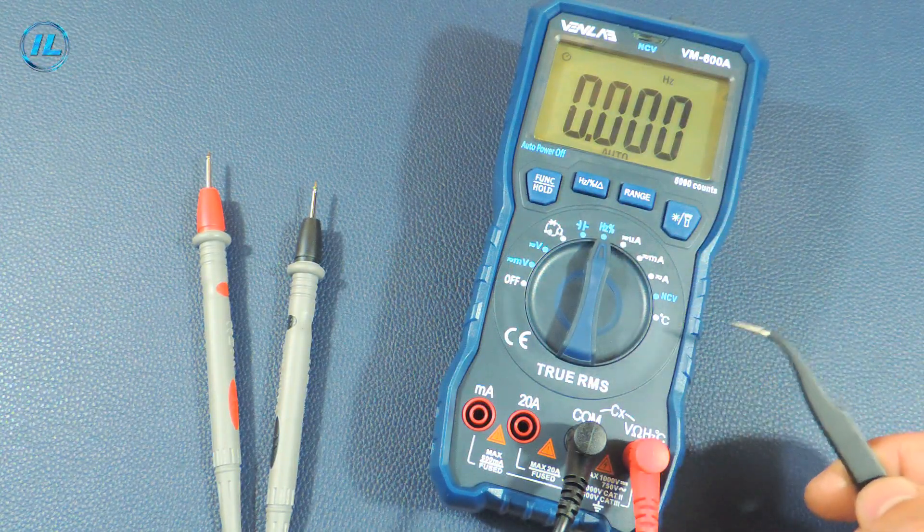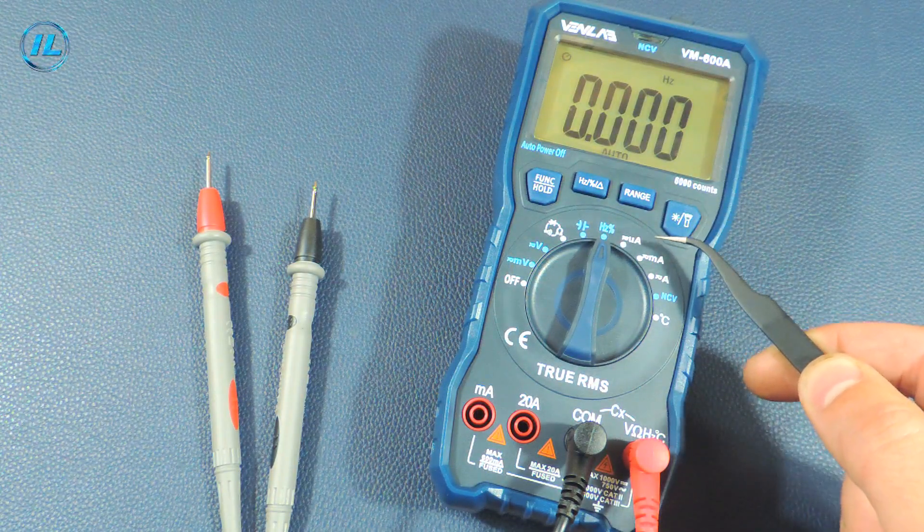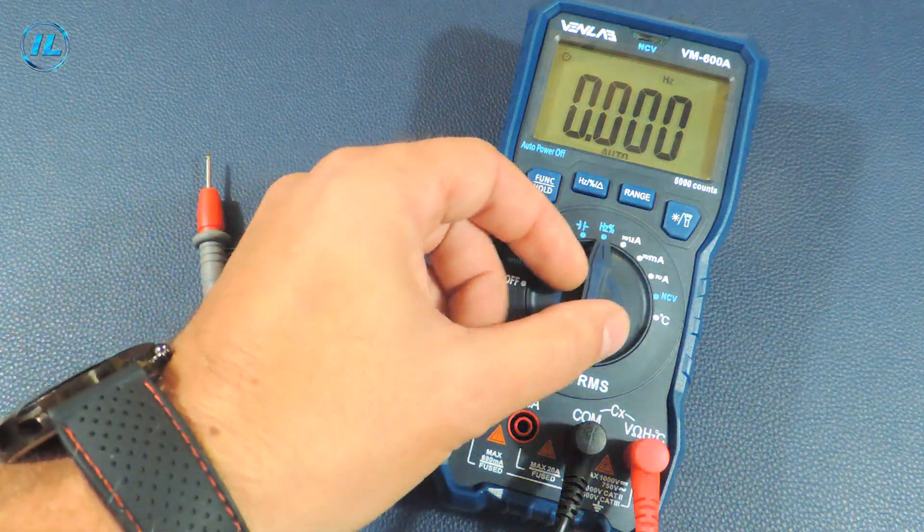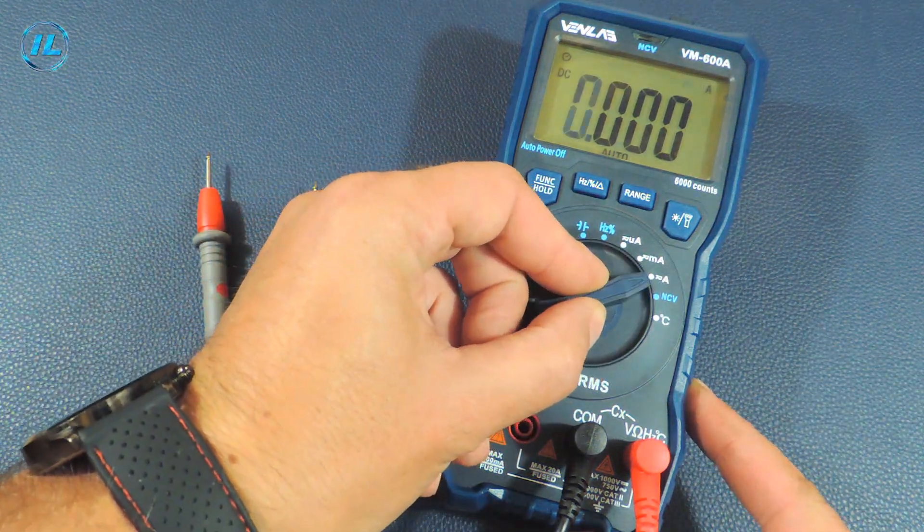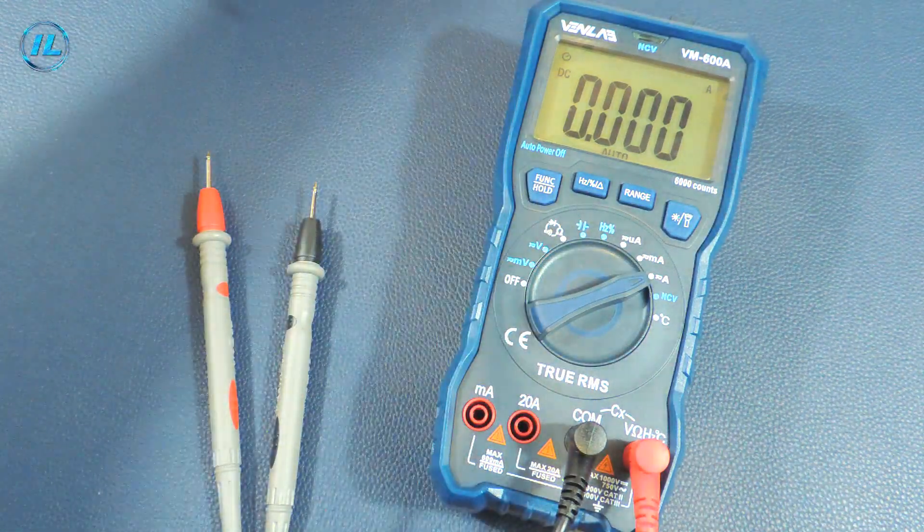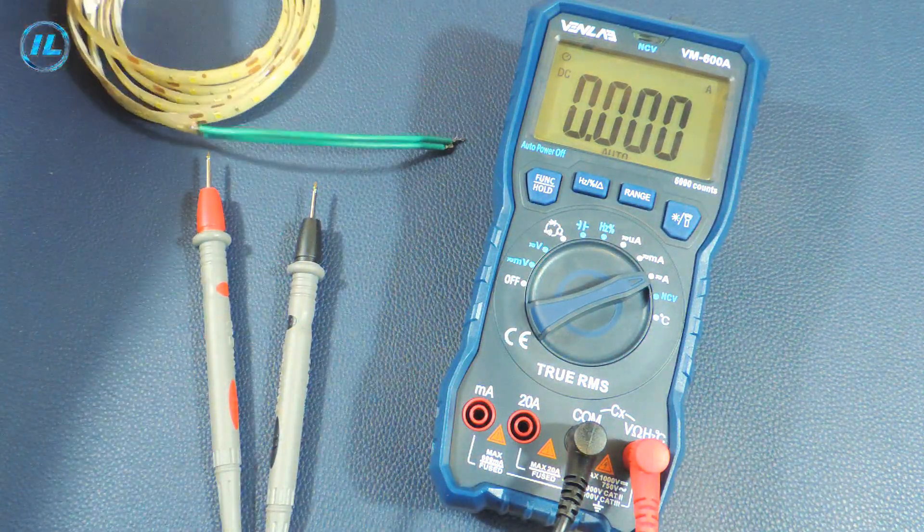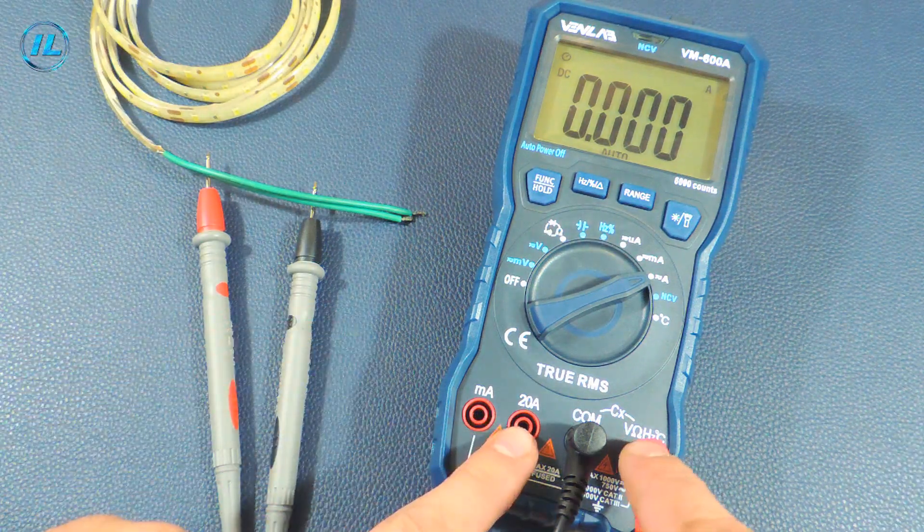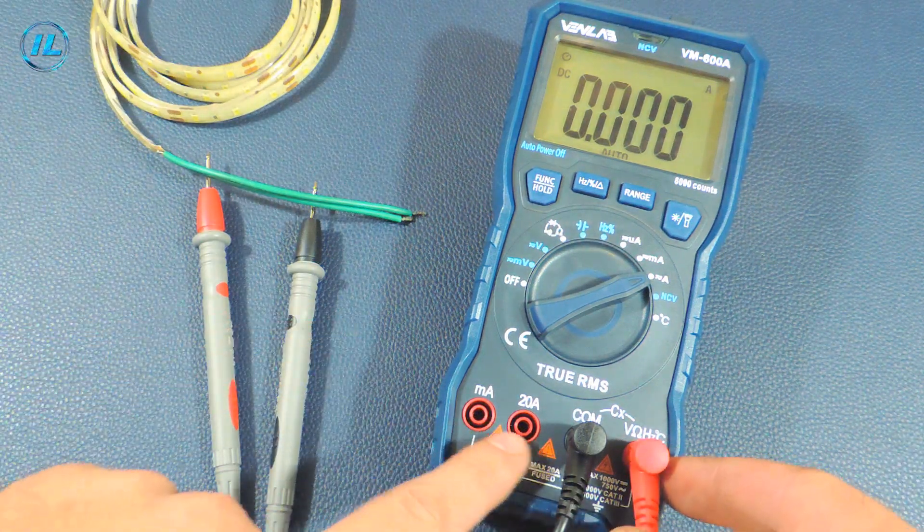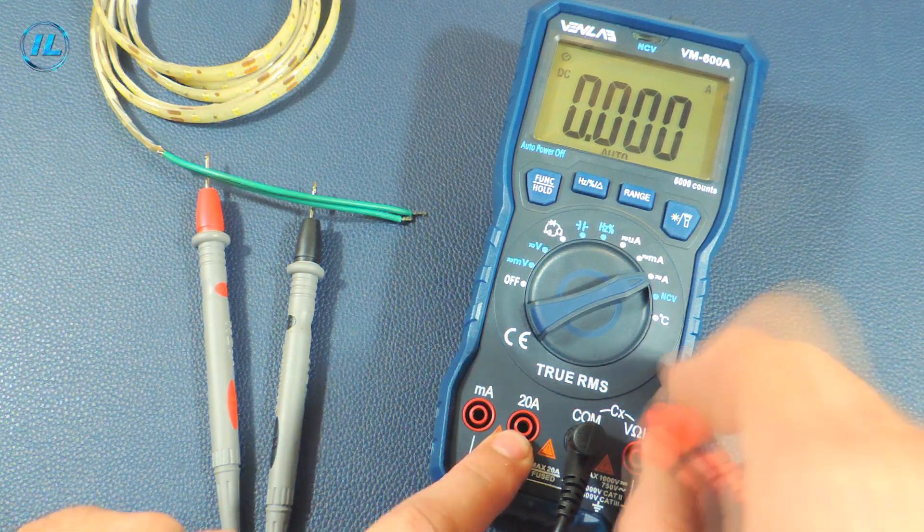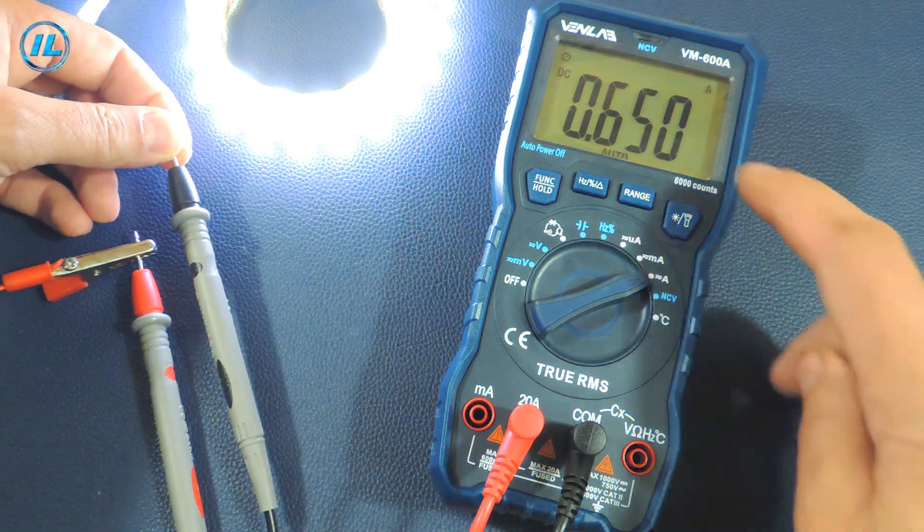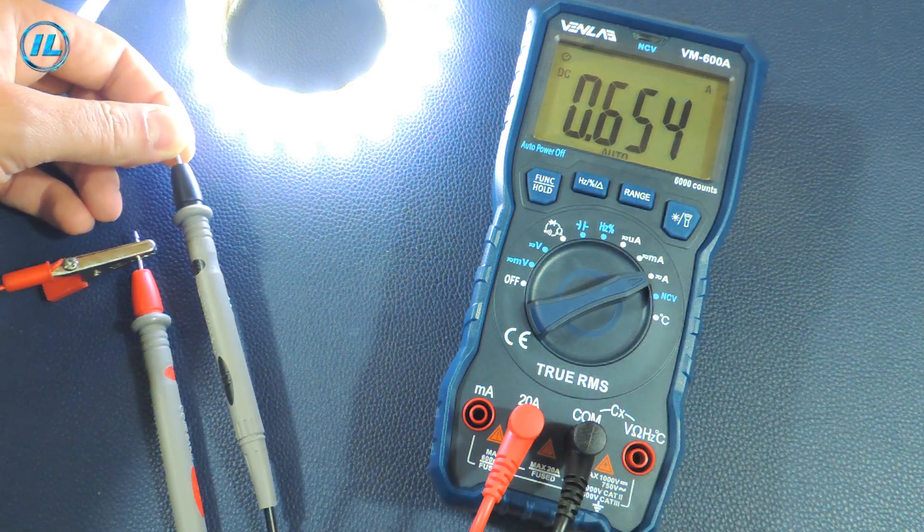The next three points are current measurement: ultra low currents, that is microamperes, then milliamps and amps. I will test one of the modes and check how much current this LED strip consumes. To measure the current strength the red probe of the multimeter must be switched to the appropriate socket. The current is 650 milliamps.